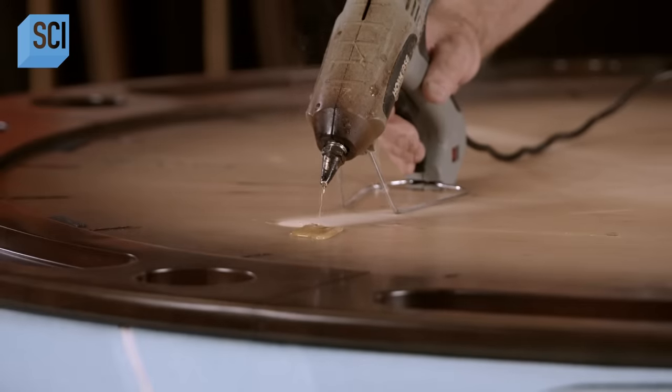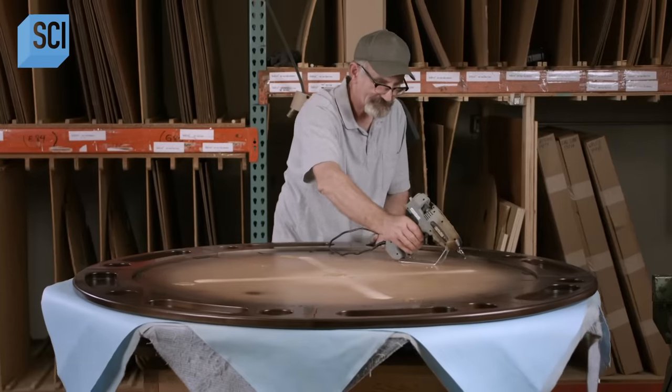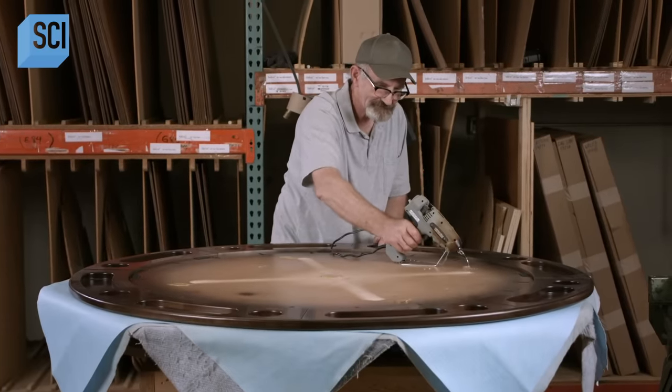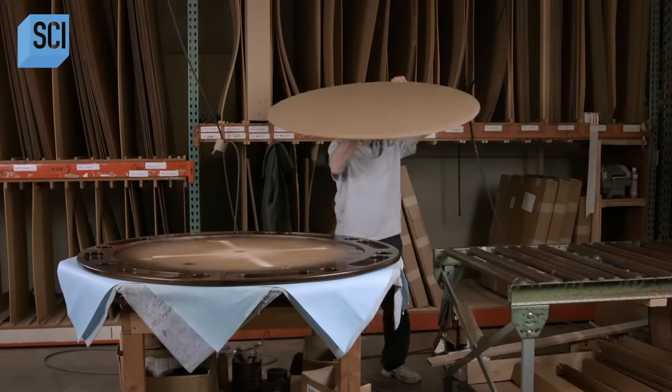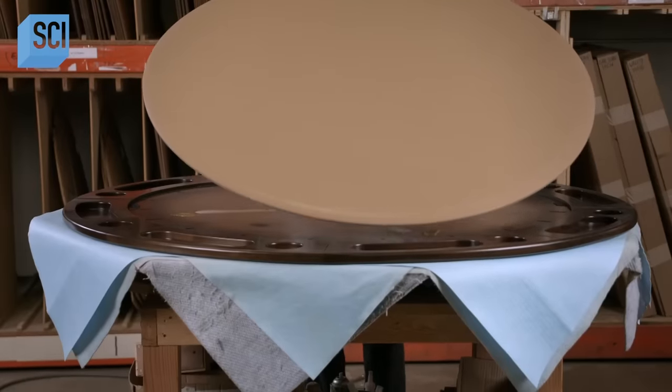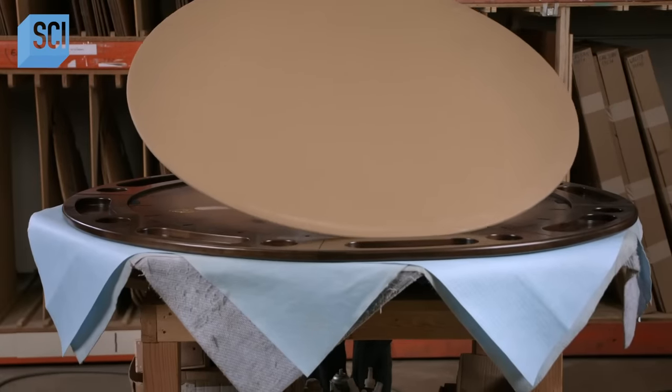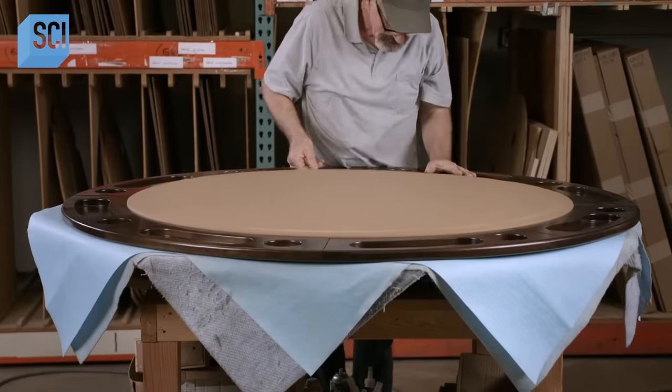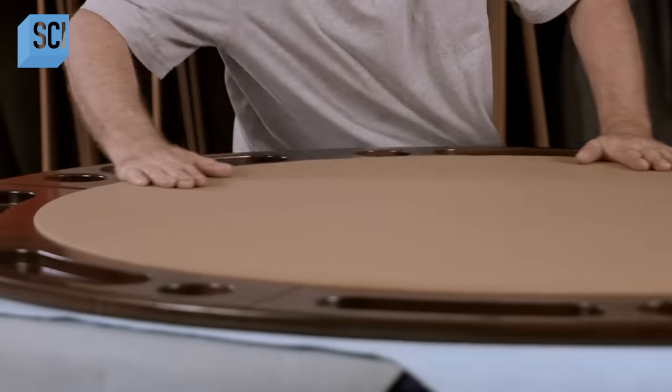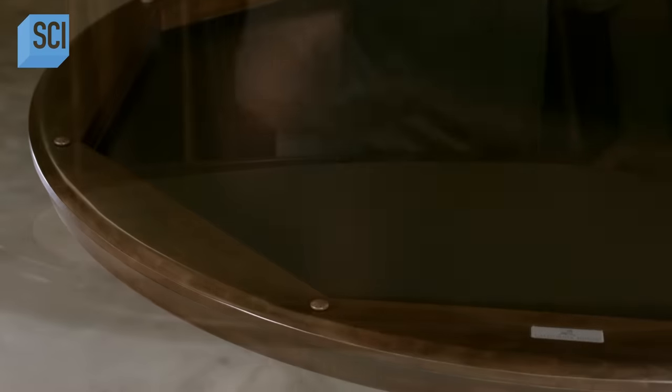Back to the game tabletop, a worker installs a cloth-covered padded insert. This will serve as a smooth and cushy surface for card play. And with that, workers finally transfer the game tabletop to the base. The games can now begin.